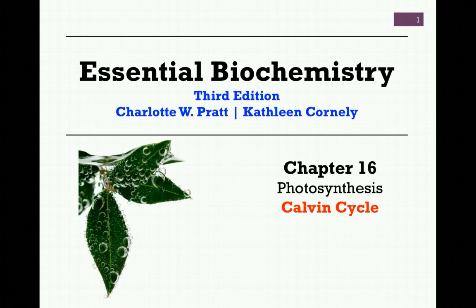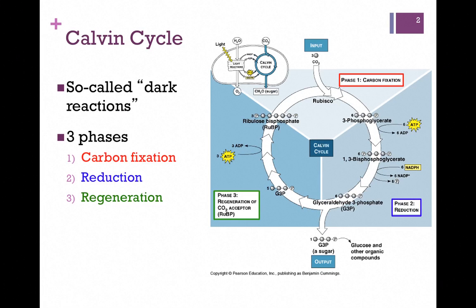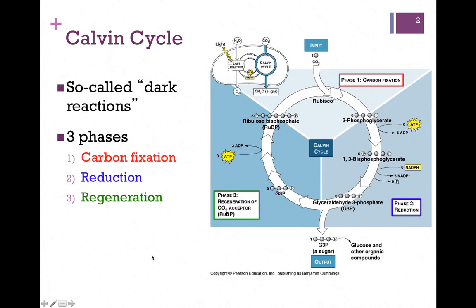The subject of our next lesson on photosynthesis from Chapter 16 is the Calvin Cycle. The Calvin Cycle involves a series of reactions that are the so-called dark reactions — as we'll see in a later lesson, it's a bit of a misnomer. It involves three phases, as illustrated in our figure here. Phase 1 is where we fix CO2, followed by phase 2, reduction, where we convert the molecule to a different form. Phase 3 is regeneration, where we regenerate our starting material — just as in the citric acid cycle.